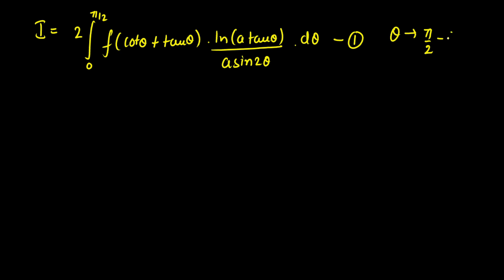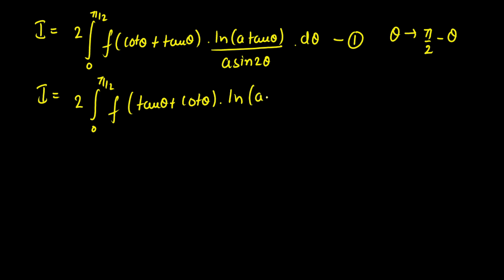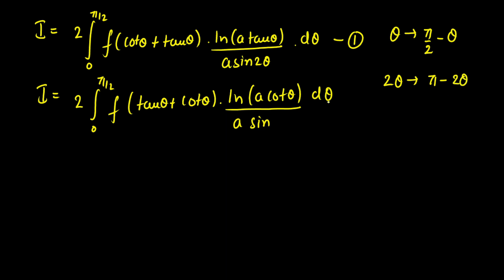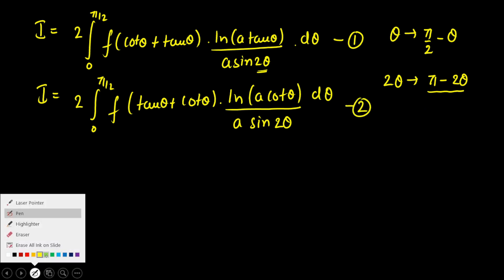Now I apply King's rule, replacing θ with (π/2 − θ), keeping limits intact. We get 2·∫₀^(π/2) f(cot(π/2 − θ) + tan(π/2 − θ)) · ln(a·cot(θ)) / sin(2θ) dθ. Note that cot(π/2 − θ) = tan(θ) and tan(π/2 − θ) = cot(θ). Also sin(π − 2θ) = sin(2θ), so the denominator is unchanged. Call this equation 2.